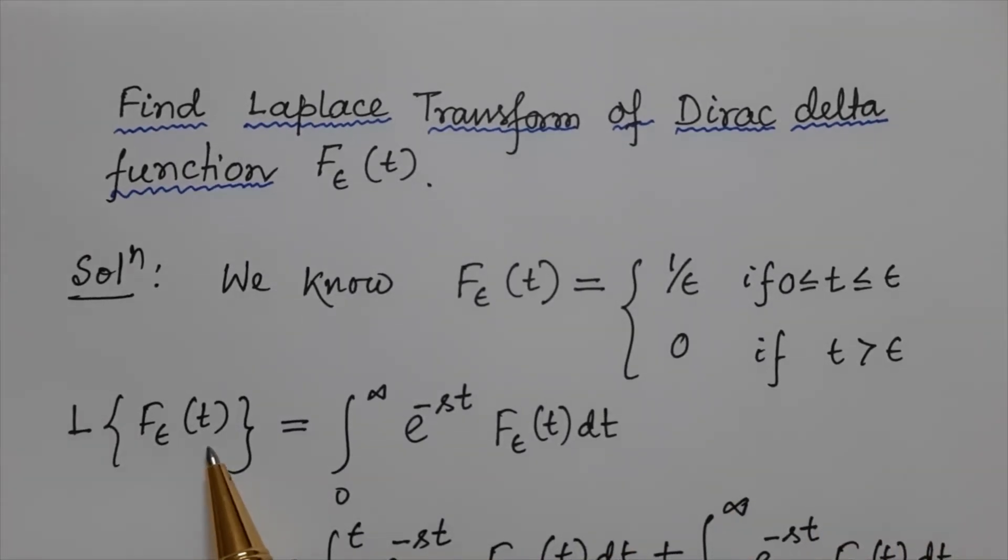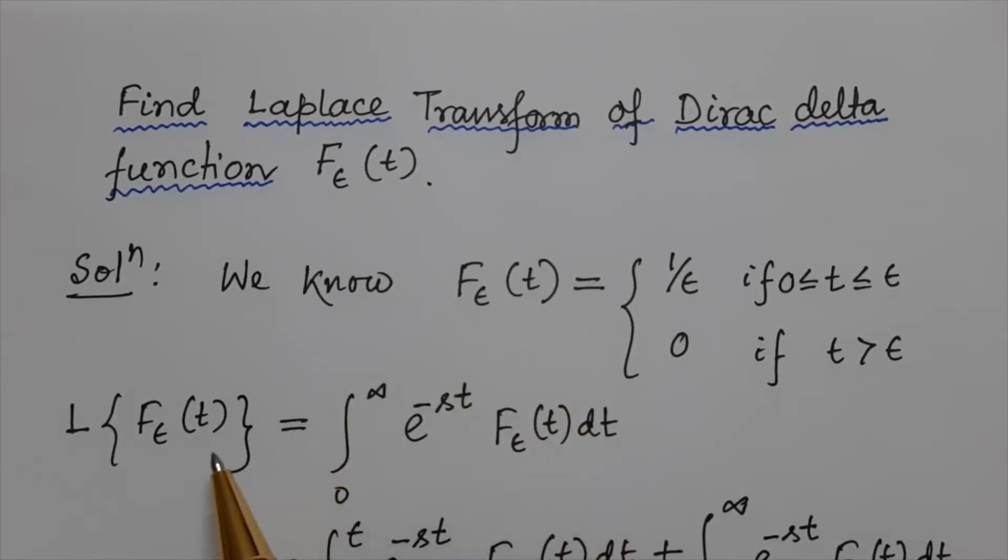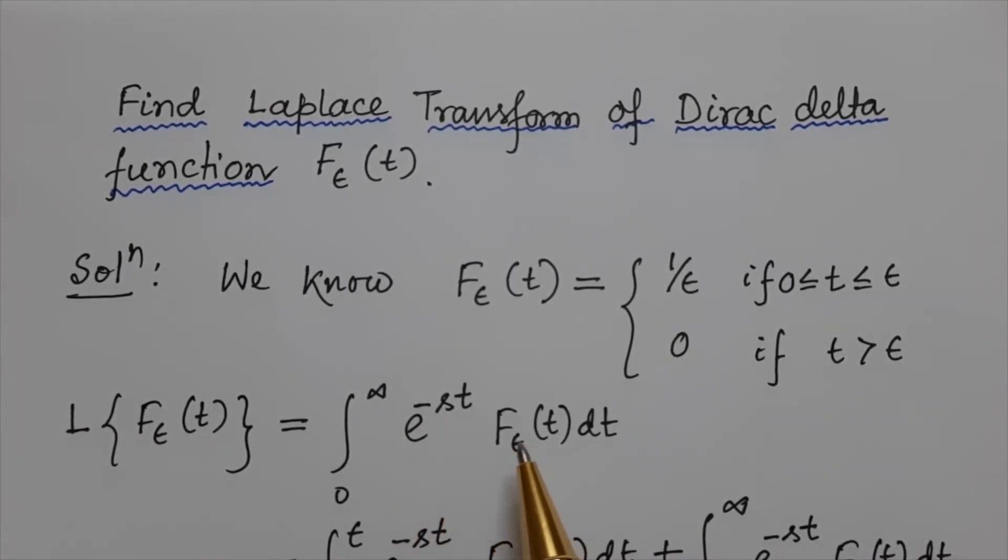Now let us find the Laplace transform of this Dirac delta function. We know the definition of Laplace transform: integration 0 to infinity, e^(-st) f(t) dt. Here f(t) is f_ε(t), and s is the parameter.